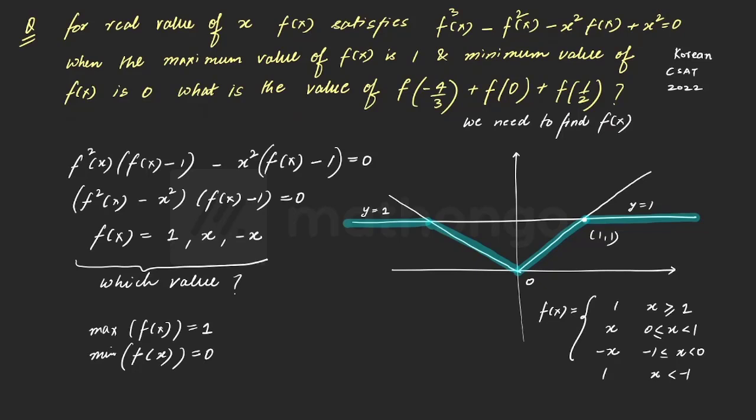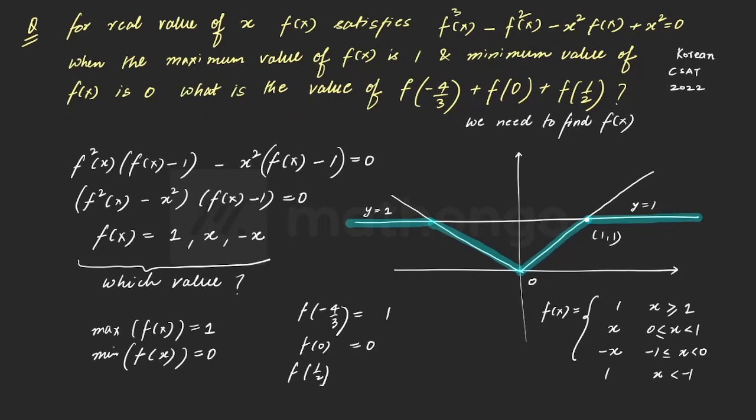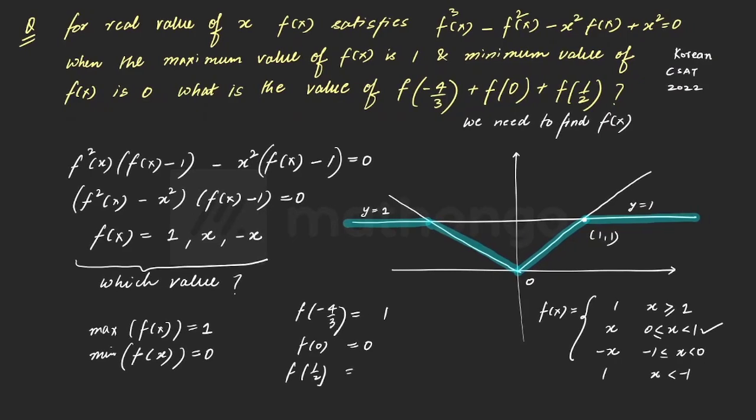On the basis of this information, now we will try to figure out the value. So what will be f(-4/3)? -4/3 will lie in this region. Superb. If it lies in this particular region, that means the value will be 1. f(0) is 0 only. And f(1/2), since f(1/2) will lie here in between 0 to 1 region, that means the answer is x only. So this will be 1/2. So if you add all three here, the final answer would be 3/2.